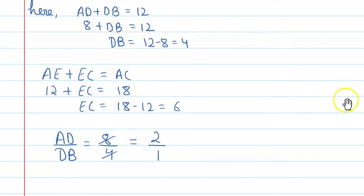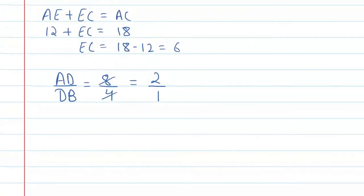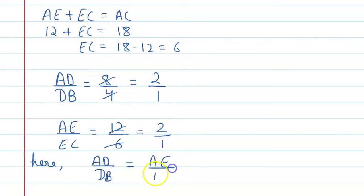Similarly, if we check AE upon EC, this is AE upon EC. If you check this, then you will get 12 upon 6, which is 2 upon 1 again. So, here, you can say AD upon DB is equal to AE upon EC.